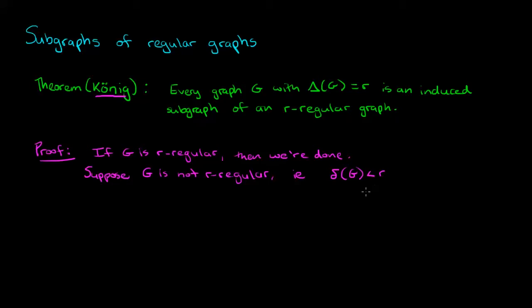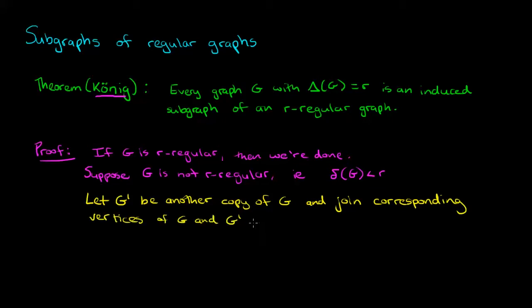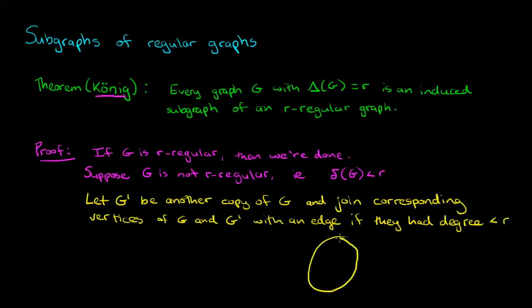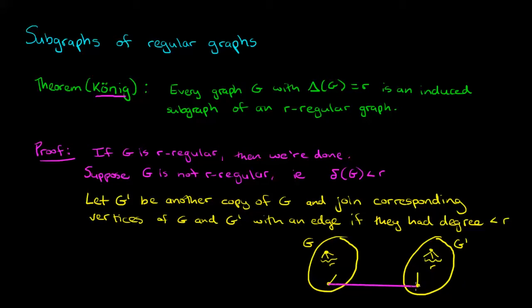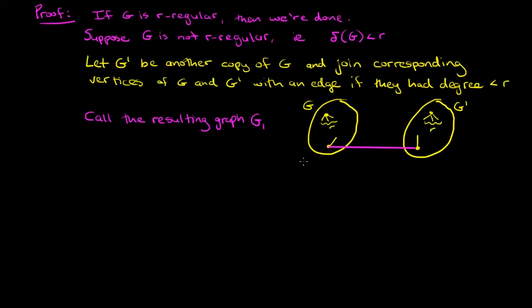What we can do to construct a graph which is r-regular and has g as an induced subgraph is the following construction. We start by letting g prime be another copy of g, and we join corresponding vertices of g and g prime with an edge if they had degree less than r. Here we have some graph g and another copy g prime. Inside g we may have vertices which already have degree r, but there may be other vertices of small degree — degree one or two, anything less than r. So we join up those corresponding vertices by an edge for every such vertex, and we call the resulting graph g1.